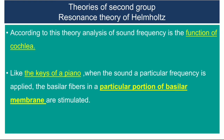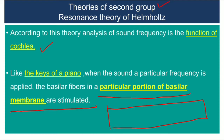Theories of the second group: one primitive theory is the resonance theory of Helmholtz. According to this theory, analysis of sound frequency is the function of the cochlea. Like the keys of a piano, when sound of a particular frequency is applied, the basilar fibers in a particular portion of the basilar membrane are stimulated — the keys are arranged from low frequency to high frequency. So there is a specific key for each frequency, and a particular portion of the basilar membrane is stimulated.